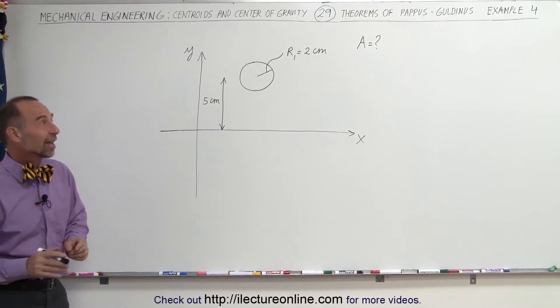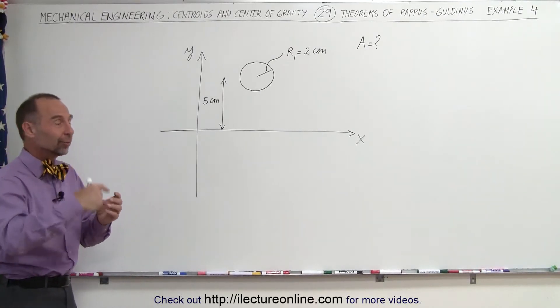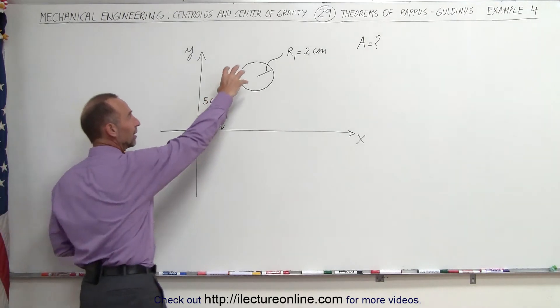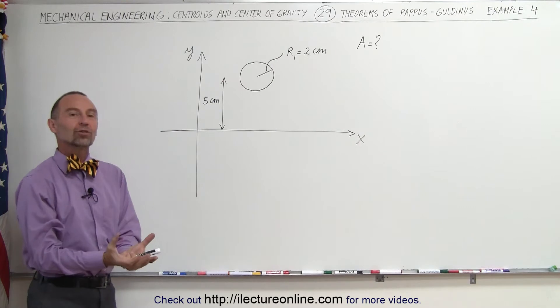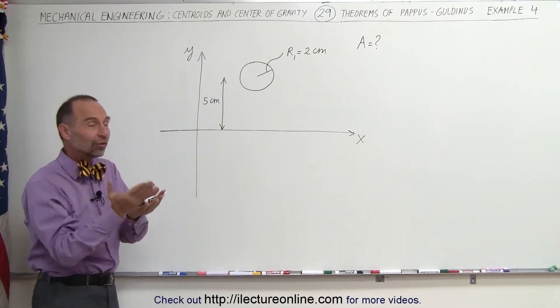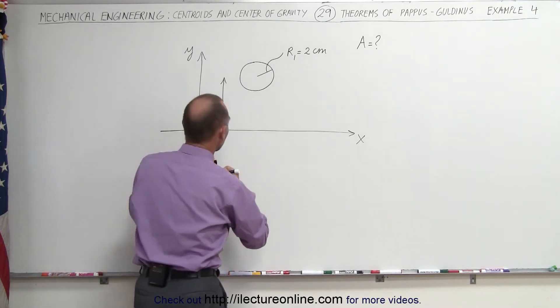Welcome to iLectra Online. Our next example deals with a circular ring that we're going to rotate about the x-axis, which then forms a toroid or a donut-shaped object. And we're trying to find the surface area of that donut-shaped object.